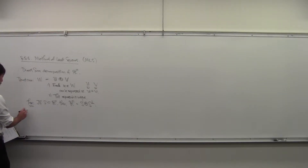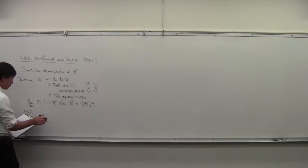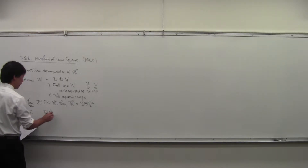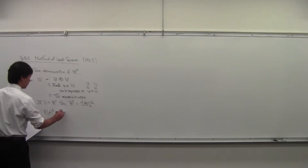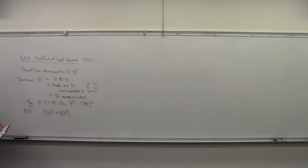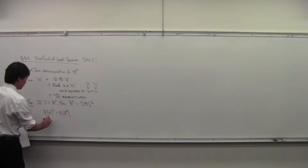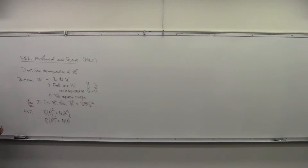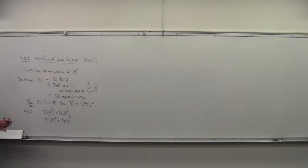The second thing is the fundamental subspaces theorem, one form of which says that if you look at the range of A and take its orthogonal complement, you get the null space of A transpose. Alternatively, if you look at the range of A transpose perp, you get the null space of A. These are things you've seen before and we're going to use them today.